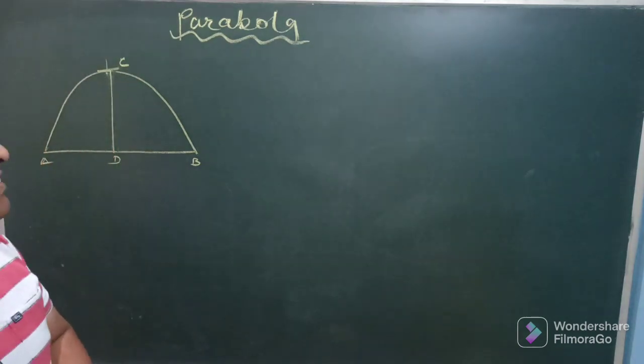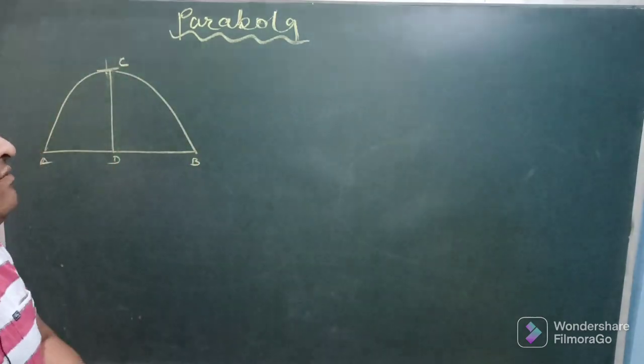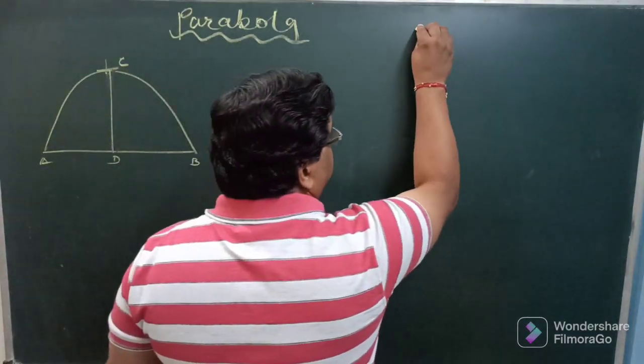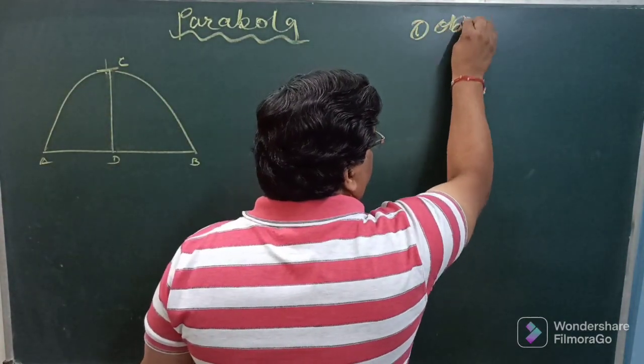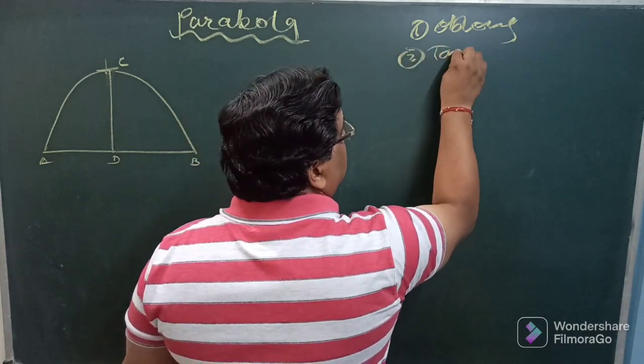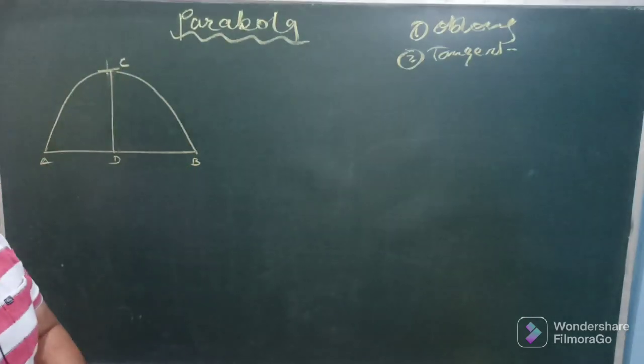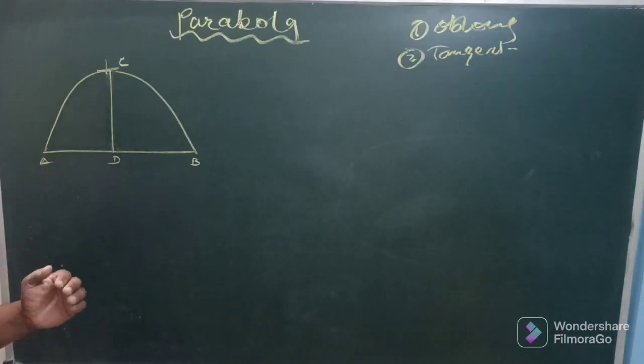So in all basically there will be two methods for parabola. One will be the oblong method and second will be the tangent method. So we will be discussing them one by one. But before that let us understand some terminologies related to parabola.